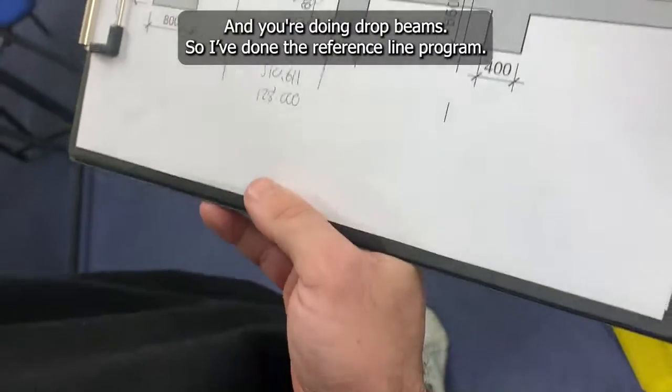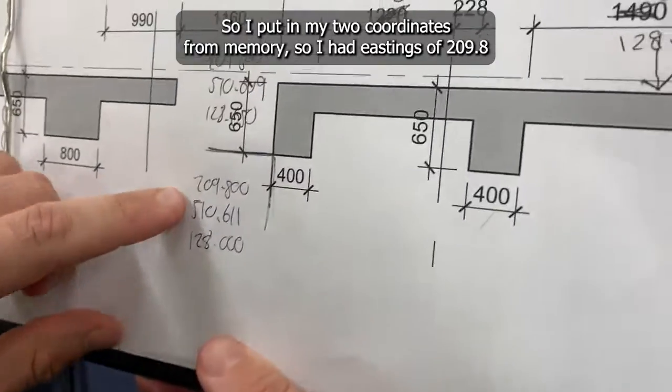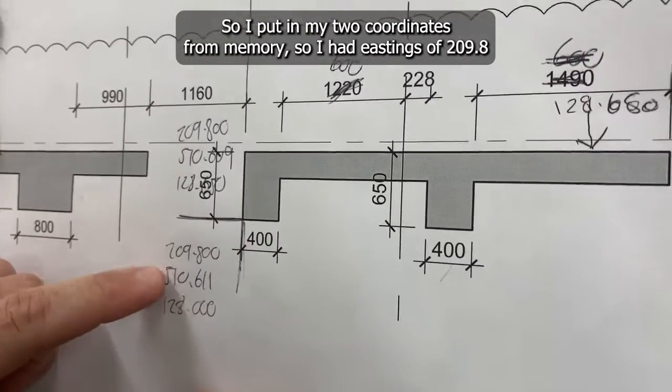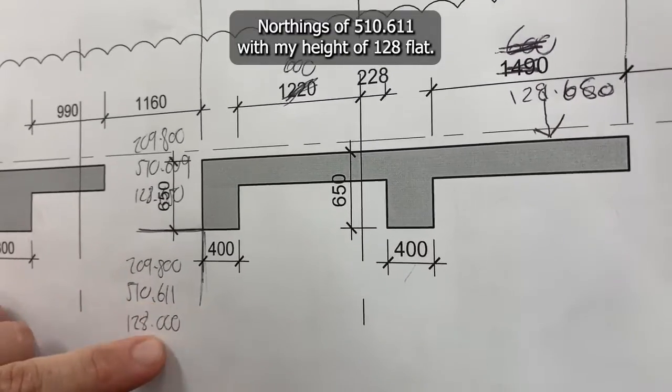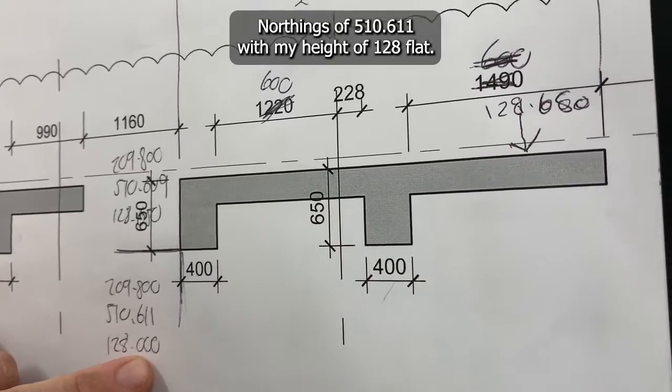I've done the reference line program. I've put in my two coordinates from memory. I had eastings of 209.8, northings of 510.611 with my height of 128 flat.